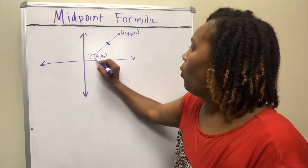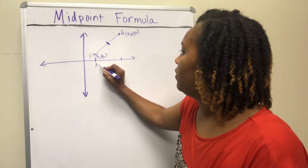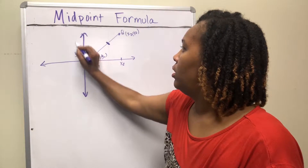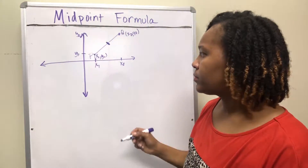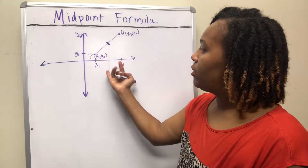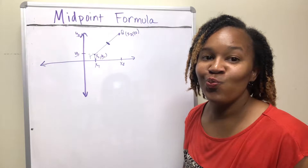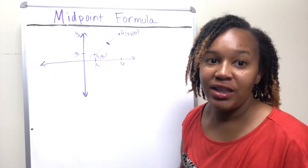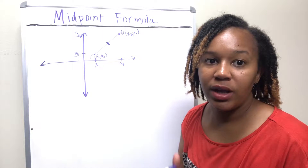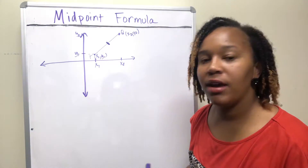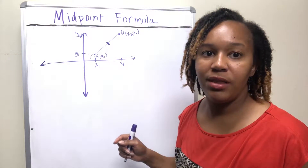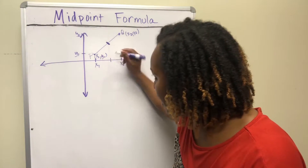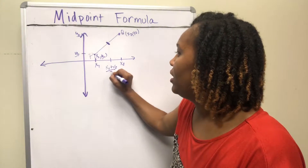So that means I want to know what x value is directly in the middle of these two x values, and what y value is directly in the middle of these two y values. How could I figure out the middle number between two numbers? You can use what's called the average. The average tells you what number is directly in the middle of two numbers. You add those two numbers up and divide by the number of numbers — in this case, two. So if I want to find the number directly in the middle of the x's, I will add x1 and x2 and divide by two.